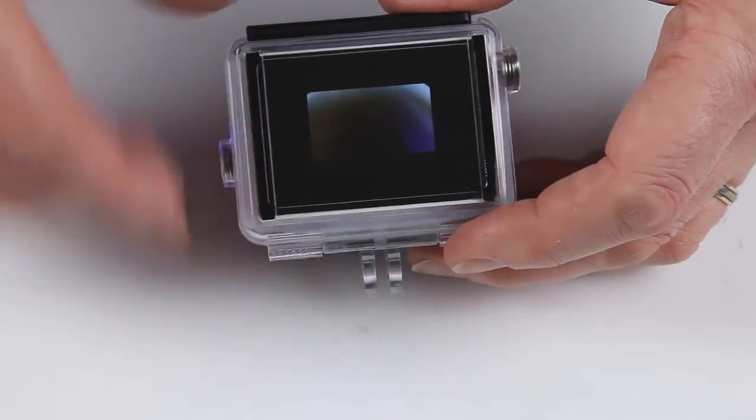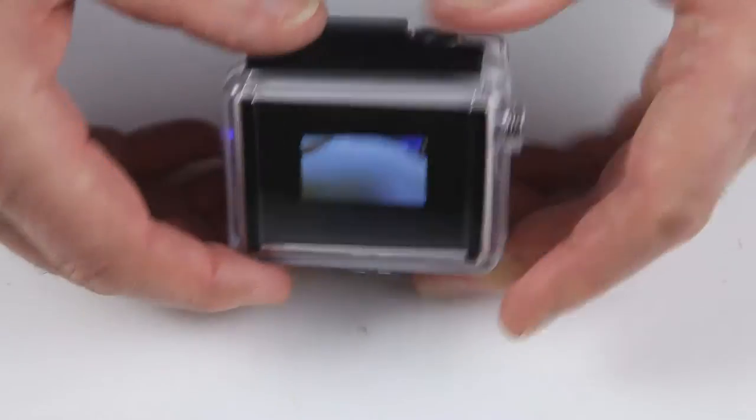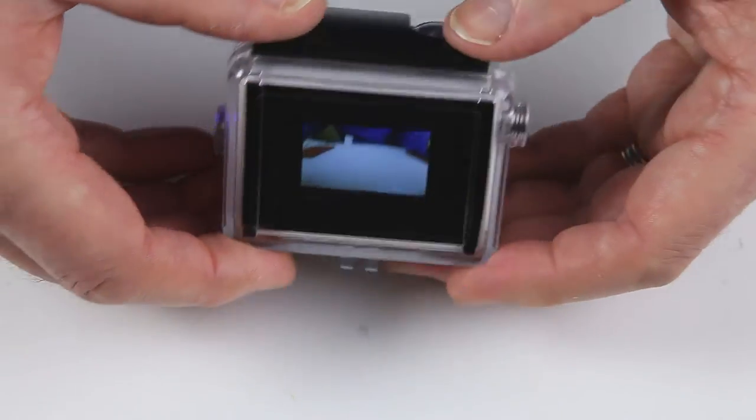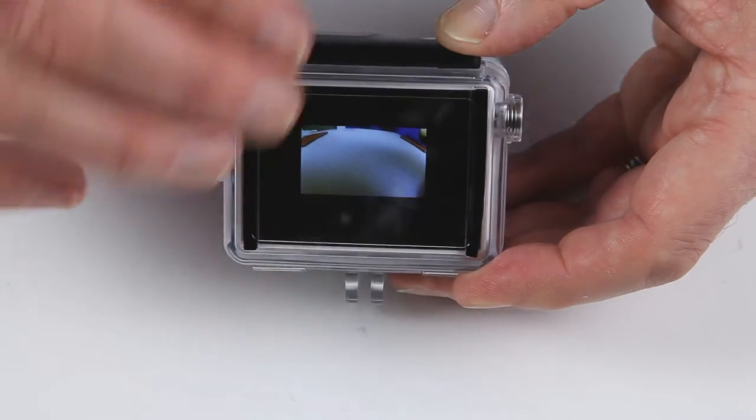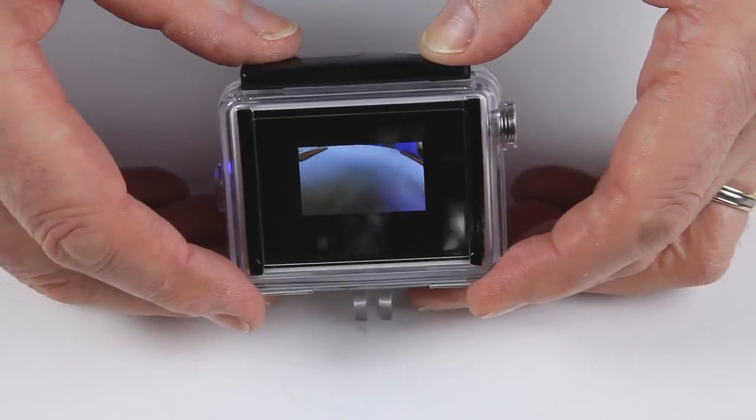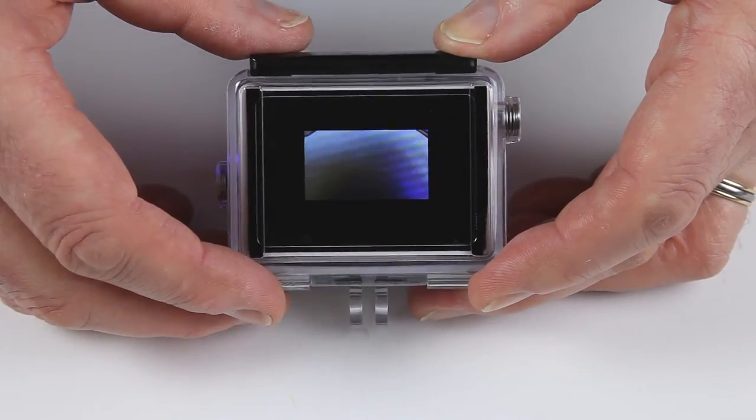So the only thing I'm a bit disappointed about are two things. One, there's no information on here at all. So if I change it over to taking still photographs, it doesn't tell you that's what it's doing. And it doesn't tell you anything at all basically. I can't change any of the settings. I have to do that through the app. So it's just the way it is.